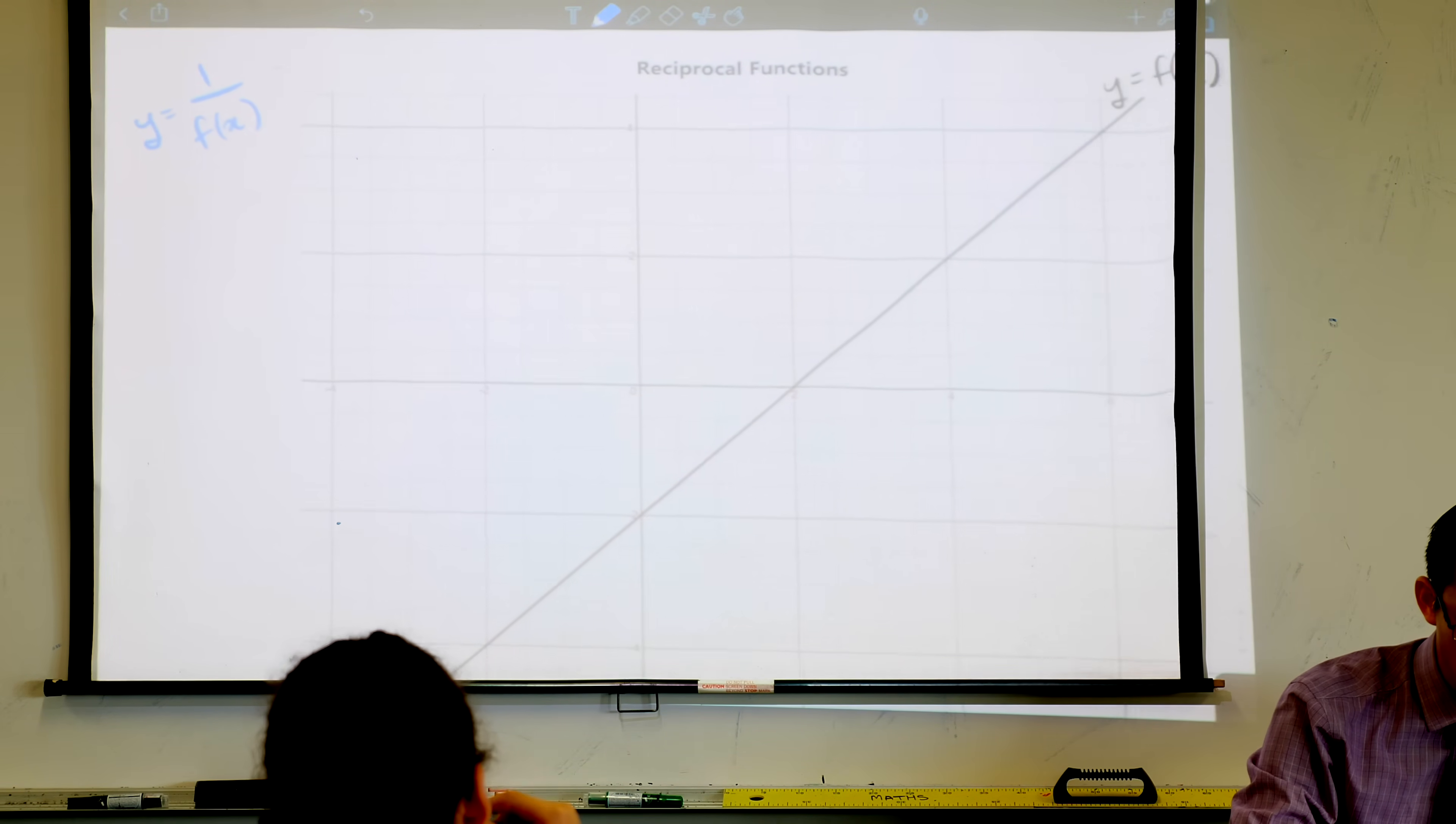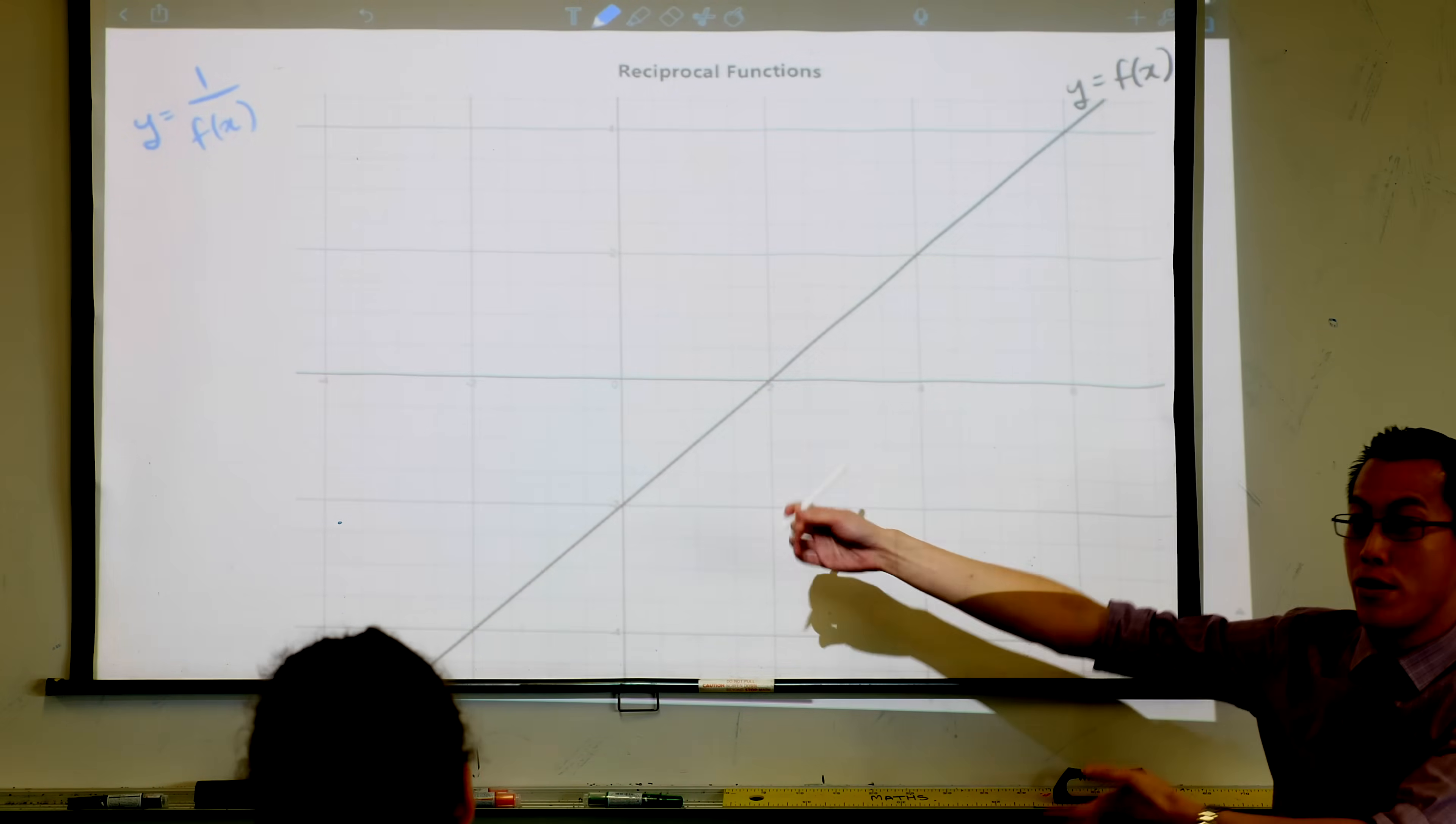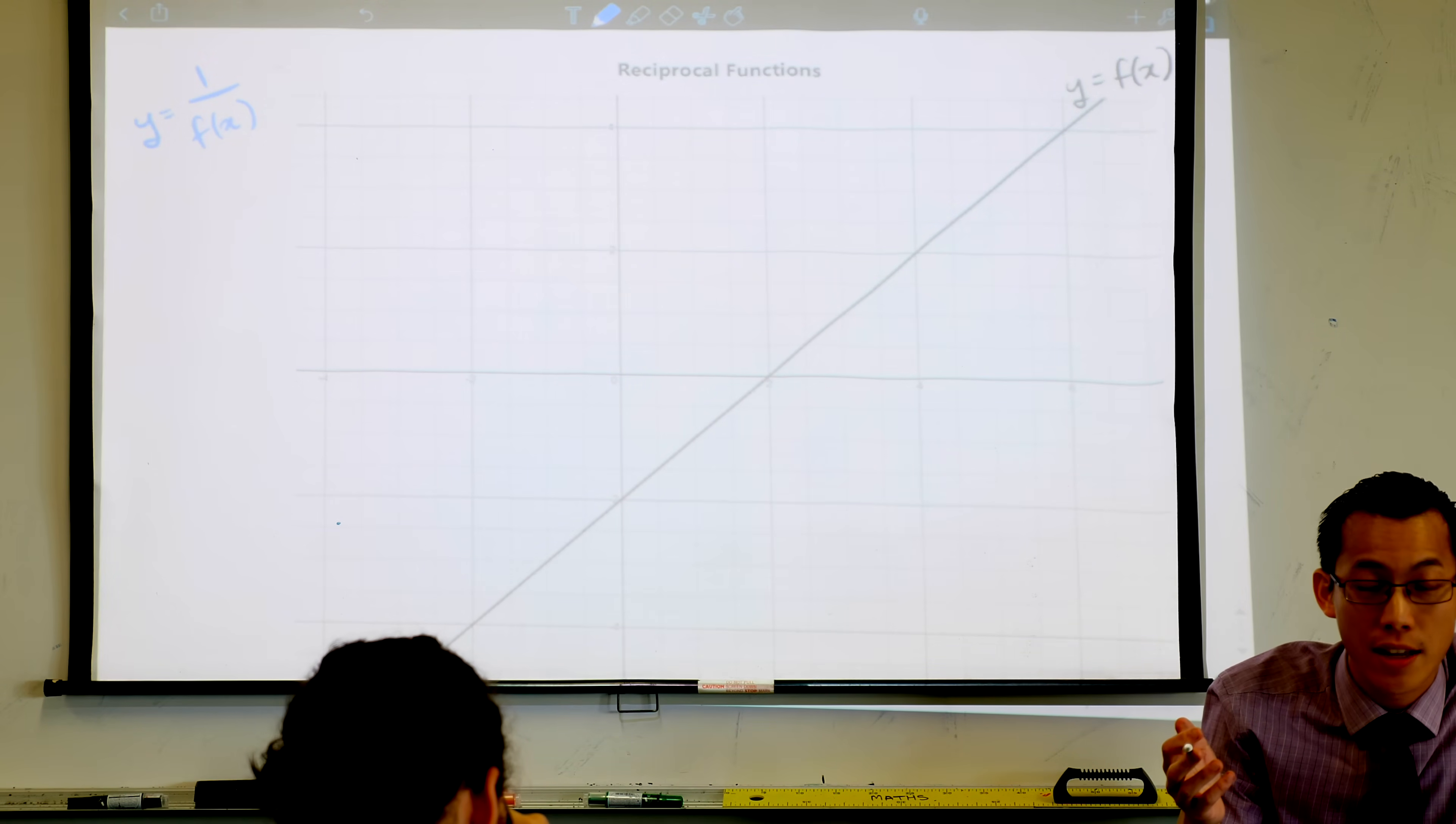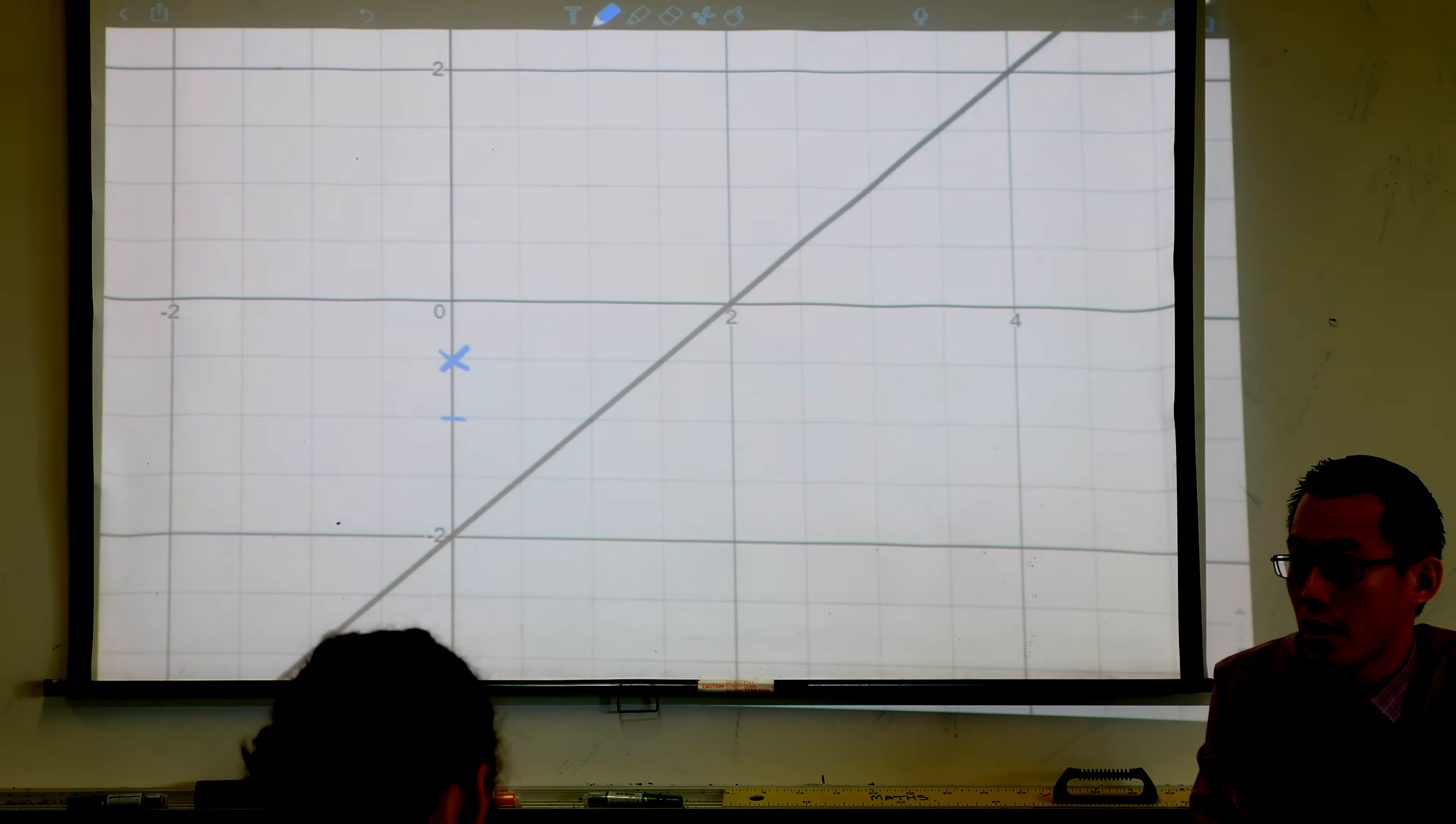So the first thing I'm going to ask you to do is to look with me at some important values. There are some important places on the graph that I can look and I can draw some conclusions. At negative 2 down here, so you can just read that value off. Any value that you can just read off the graph. Negative 2, I know what the reciprocal of negative 2 is. Can someone tell me what the reciprocal of negative 2 is? It's negative a half, great. And you can see where negative a half should go. If that's negative 2, that's negative 1 there. So negative a half, I'm going to place there. So I'm going to put a little cross there.